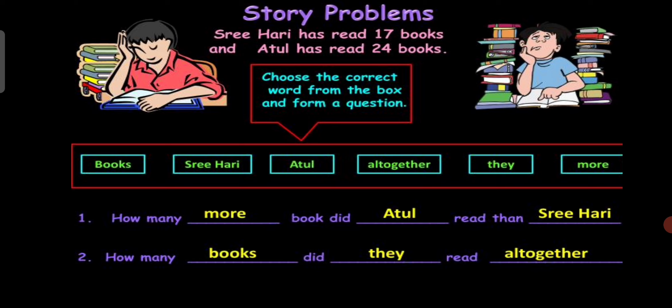Shri Hari has read 70 books and Atul has read 24 books. Now we have to fill these two sentences. Some words have been given: books, Shri Hari, Atul, altogether, they, more. First sentence is how many more books did Atul read than Shri Hari? And second, how many books did they read altogether? Altogether and than - we can compare the words here and tell the children that than means there is comparison.